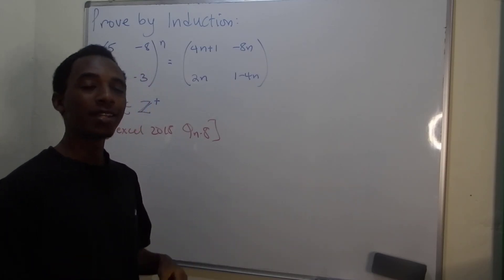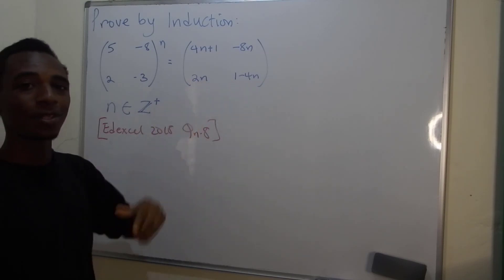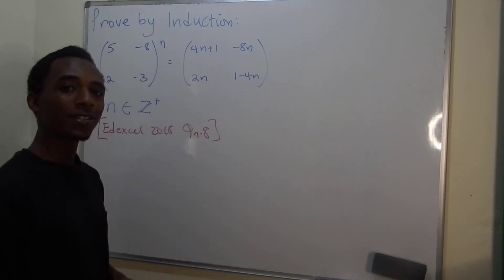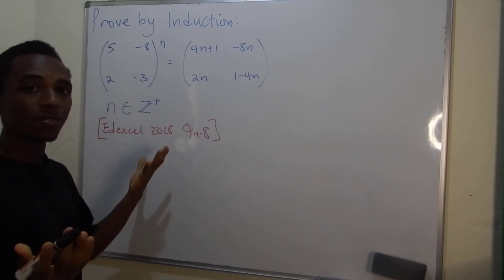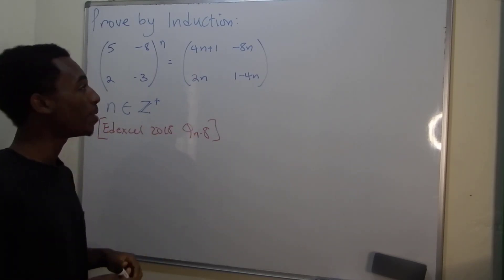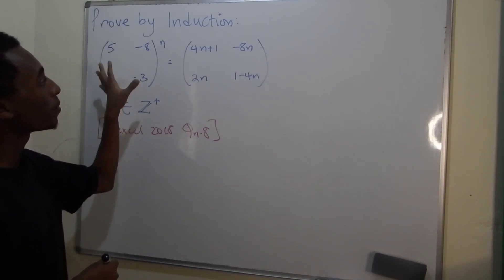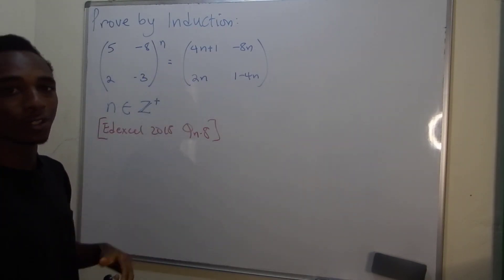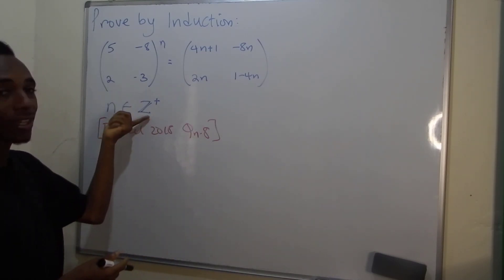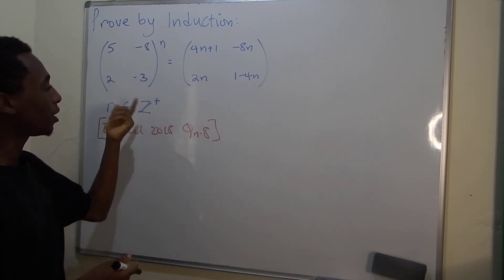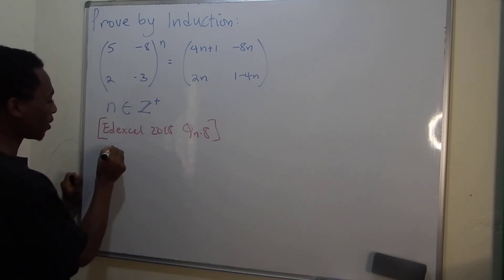Alright, so we have to prove by induction that this matrix to the power n is going to be equal to this matrix on the right-hand side. So let's get started with anything to do with proof by induction. We have to begin with the basis step where we prove that this expression is true for the first few values of n. Here n is a positive integer, so let's begin with n equals 1.